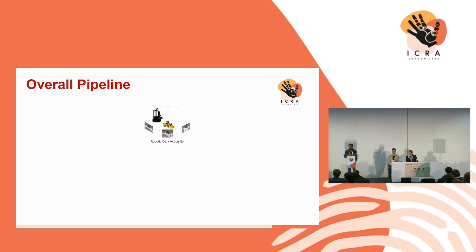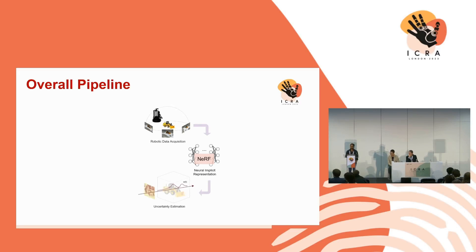Here is the overall pipeline. We acquire some initial images to initialize the neural representation. Once we have that, we use our entropy-guided policy to define how likely an image contributes to the initial coarse reconstruction, and we keep doing that until we no longer have any information gain.